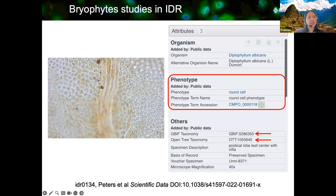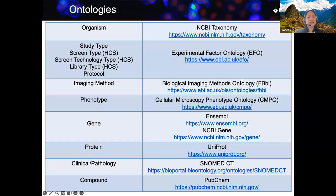This leads me on to ontologies. Here is a list of the public ontologies we currently use in IDR. For organism, we use the NCBI taxonomy. For study type, high content screen types and protocol, we use the EFO. For imaging method, we use the FBBI. For phenotype, we use the CMPO. For gene, we use either Ensembl or NCBI gene. For protein, we use UniProt. IDR has also been receiving more clinical data and compound screens, so we use SNOMEDCT for clinical data and PubChem for compounds.